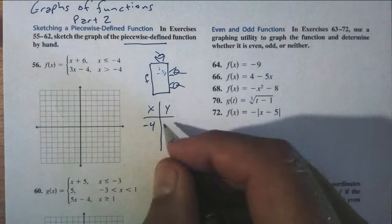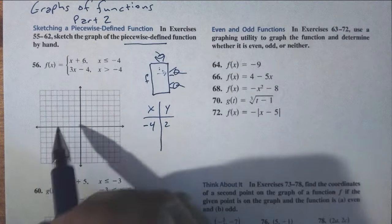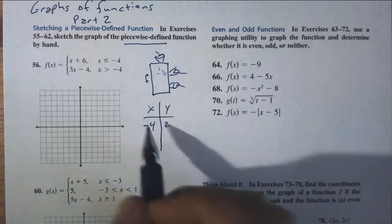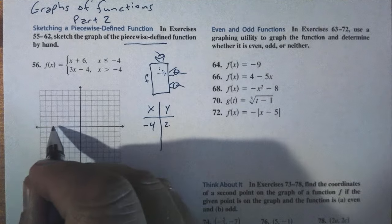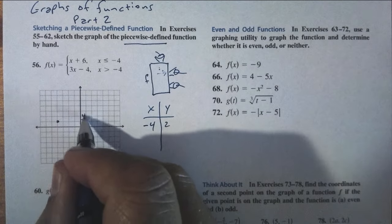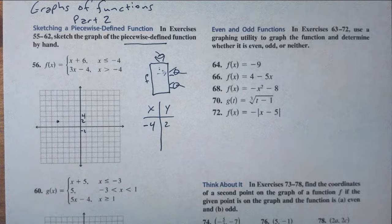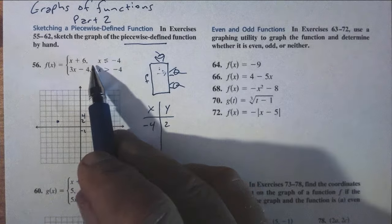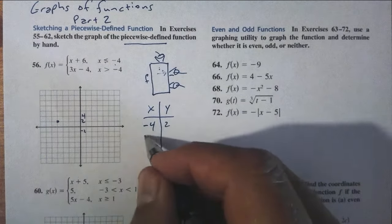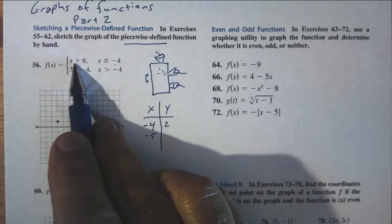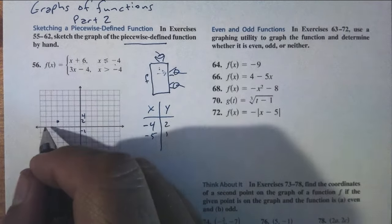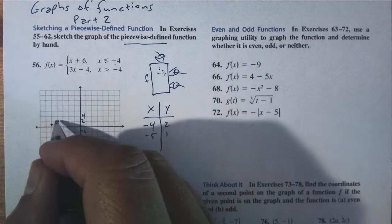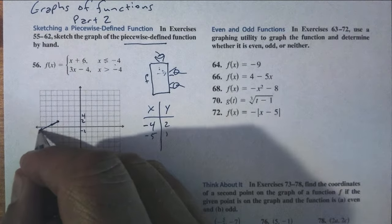I'm going to count by twos for my height. At negative 4, negative 4 gets treatment A since it's less than or equal to negative 4, so that gives us 2. At negative 5, I get 1, so at negative 5 I'm at 1. There's a slope of up 1 over 1, but this portion of the graph only exists to the left.